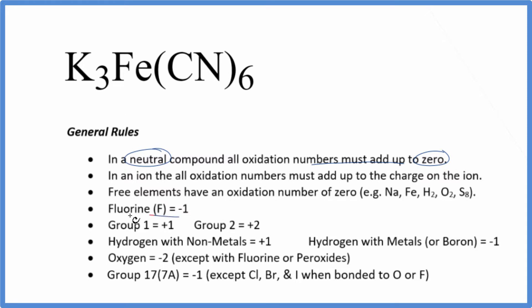Potassium, that's in group one on the periodic table, that's going to be plus one. So each one of these potassium atoms will have a plus one oxidation number.